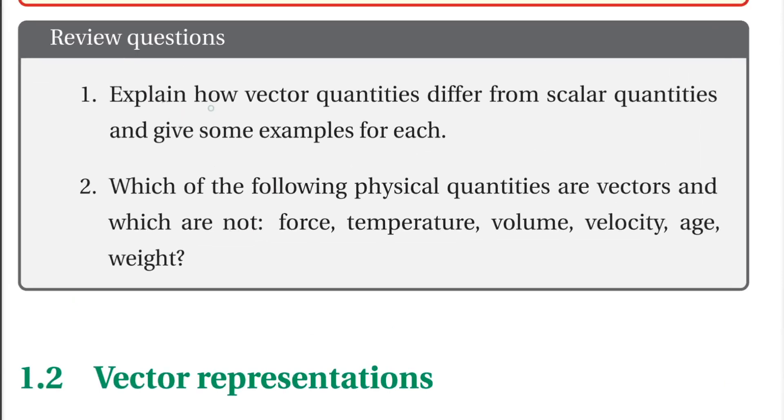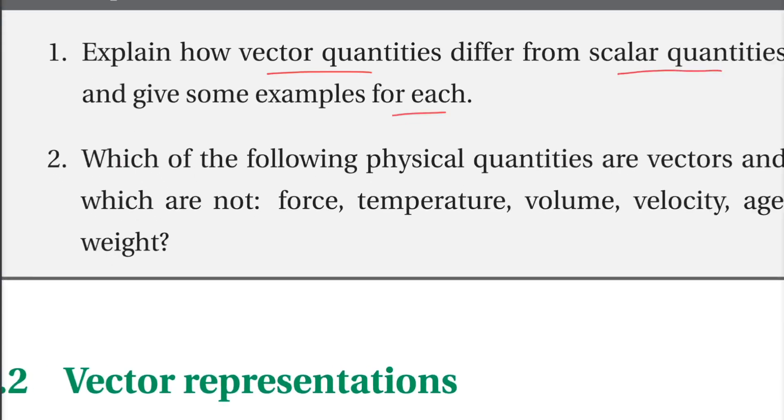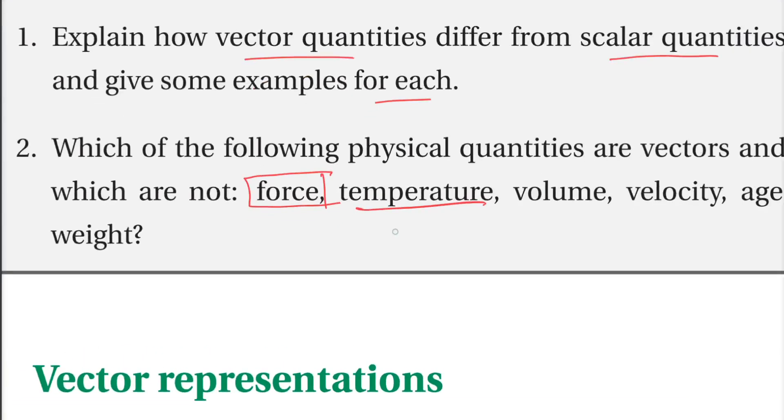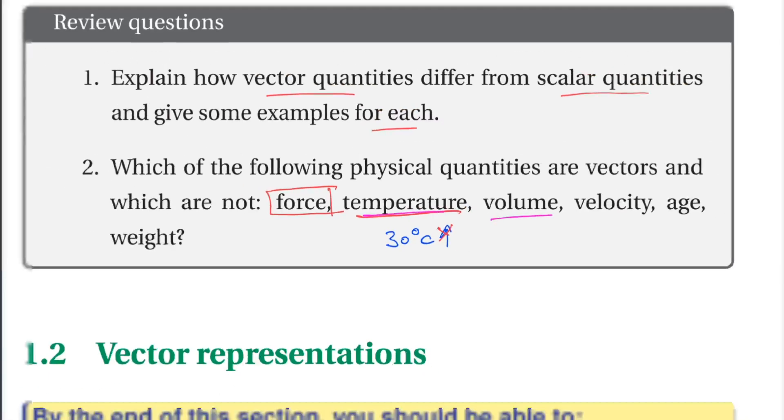I will explain how vector quantities differ from scalar quantities and give some examples for each. Which of the following physical quantities are vectors and which are not? Force is vector. Temperature, 30 degrees Celsius, is scalar. Volume is scalar.